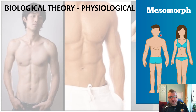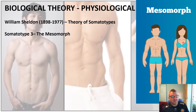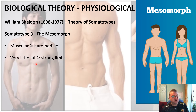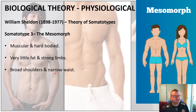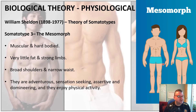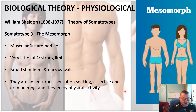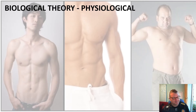His final somatotype was the mesomorph. Mesomorphs are muscular and hard-bodied, with very little fat, strong limbs, broad shoulders, and narrow waists. They are adventurous, sensation-seeking, assertive, and domineering, and they enjoy physical activity.